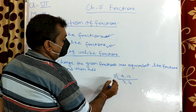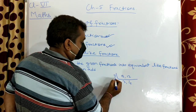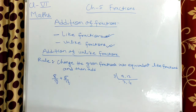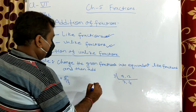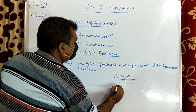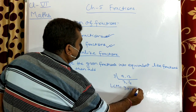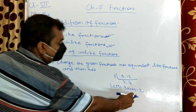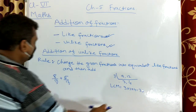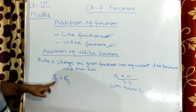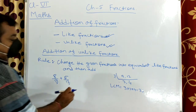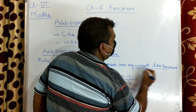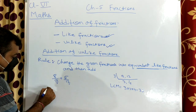The LCM equals 3 into 3 into 4, which is 36. So LCM is 36. Now we will divide this LCM by the denominator of the first fraction: 36 divided by 9 equals 4. We multiply 4 by the numerator 8, giving us 32 by 36.